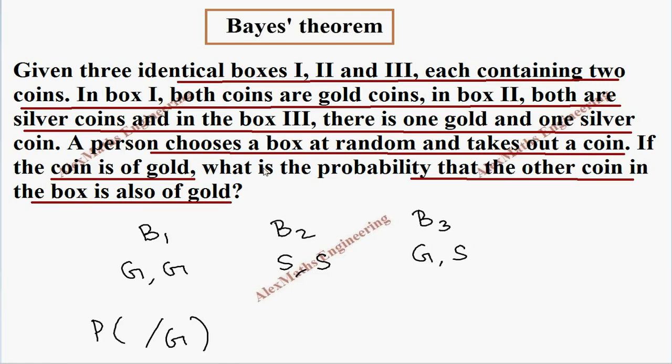It is possible only in the case of box 1. Already we got one gold. Then again, we are looking for the another coin in the box is also of gold means it can be only from B1. So, what they are asking is P of B1 by G. So, what they are asking will come in the numerator part and what we already know will come in the denominator part.